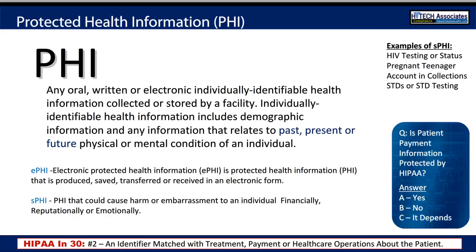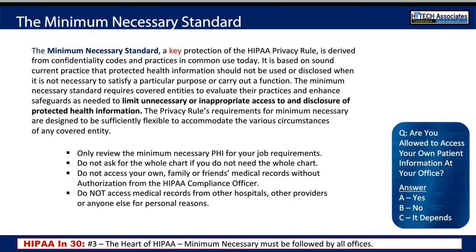ePHI is electronic protected health information — all of the information stored on your computers and in your EHR. SPHI is sensitive protected health information that could cause harm to a family or individual either reputationally, emotionally, or financially. The minimum necessary standard is a key protection of the HIPAA Privacy Rule, and it basically states that we need to limit our access and disclosures of protected